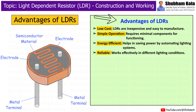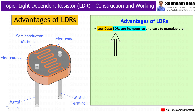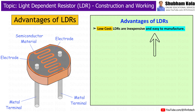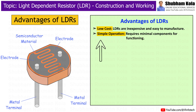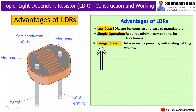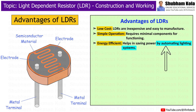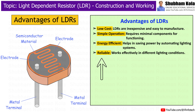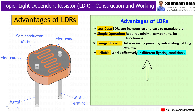Next are the advantages of LDRs. LDRs are low cost and easy to manufacture. They have simple operation and require minimal components for functioning. LDRs are energy efficient, helping to save power by automating lighting systems. They are also reliable and work effectively in different lighting conditions.